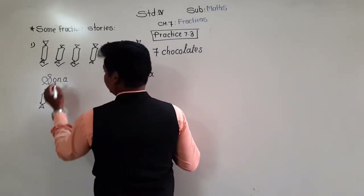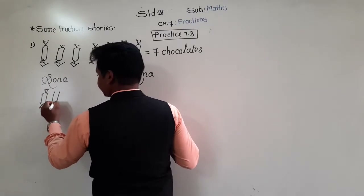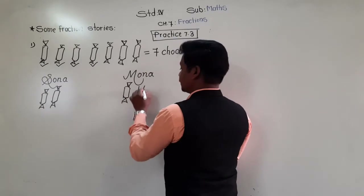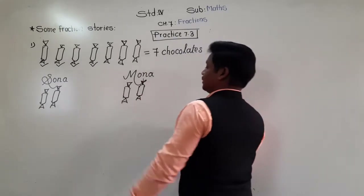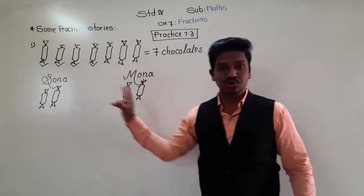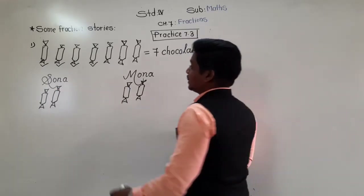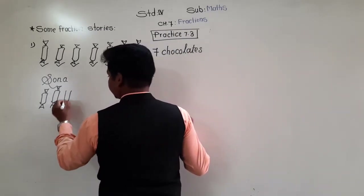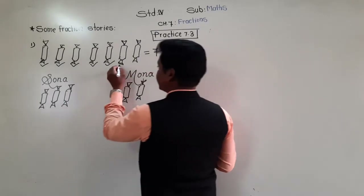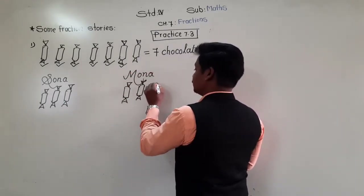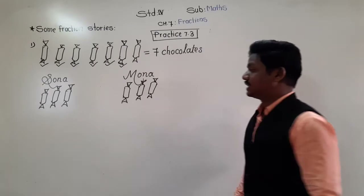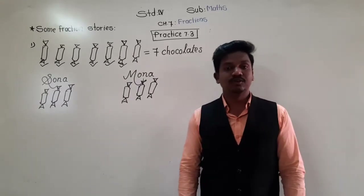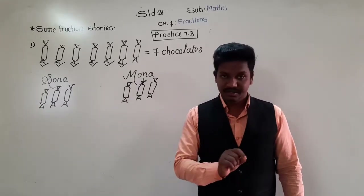Then the 3rd chocolate I will give to Sona again, and the 4th chocolate to Mona. Now both have got 2 each. There are 3 chocolates remaining, so I can give 1 each to both. The 5th chocolate I give to Sona, the 6th chocolate to Mona. Now both have got 3 each.